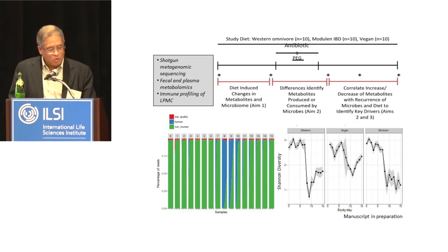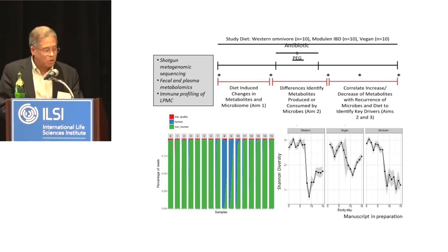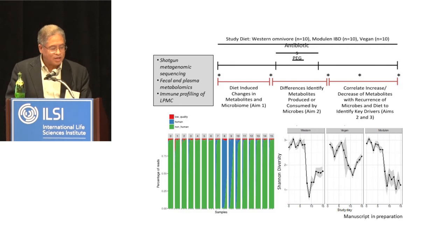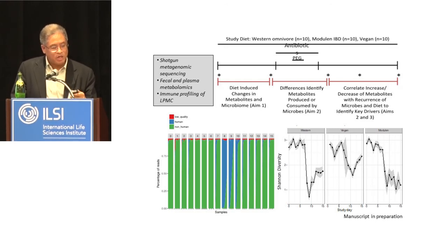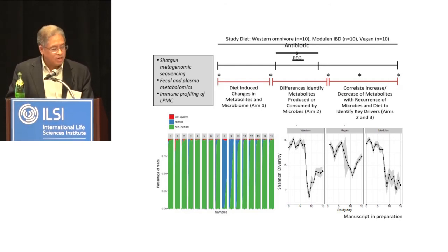This was a two-week intensive inpatient feeding study with vegans, omnivores, and omnivores randomized to consume exclusive enteral nutrition — a liquid polymer formulation called Modulen used to treat inflammatory bowel disease. Vegans were allowed to be outpatients because they're trustworthy regarding diet, but omnivores were kept inpatient. We looked at the impact of those diets on microbiome composition, performed an intervention, and examined effects on the metabolome. We did shotgun metagenomic sequencing across all time points, deep plasma and fecal metabolomics, and we also looked at the mucosal immune system.